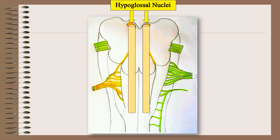The paired nuclei extends almost the entire length of the medulla, just beneath the floor of the fourth ventricle, close to the midline under the medial aspect of the hypoglossal trigone.